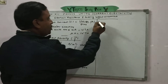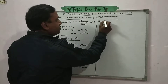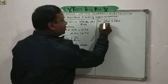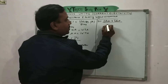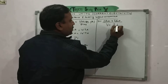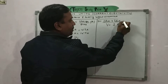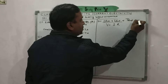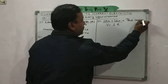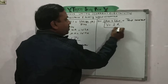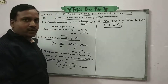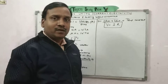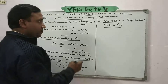The next topic is Ohm's law, which is stated as V = IR, with the condition that temperature must be constant. Here V is the potential difference, I is the current flowing through the conductor, and R is the resistance of that conductor.